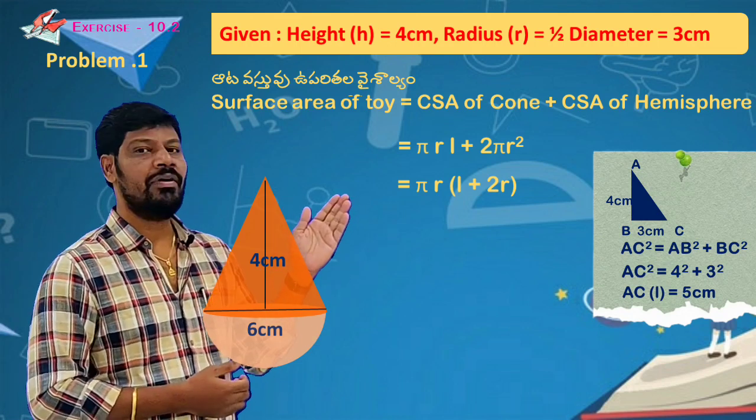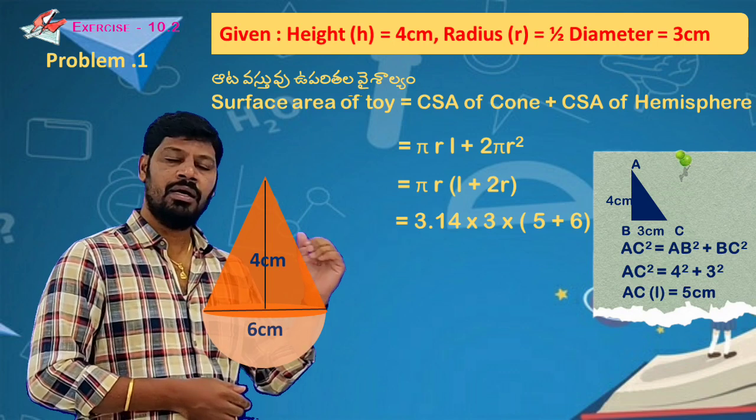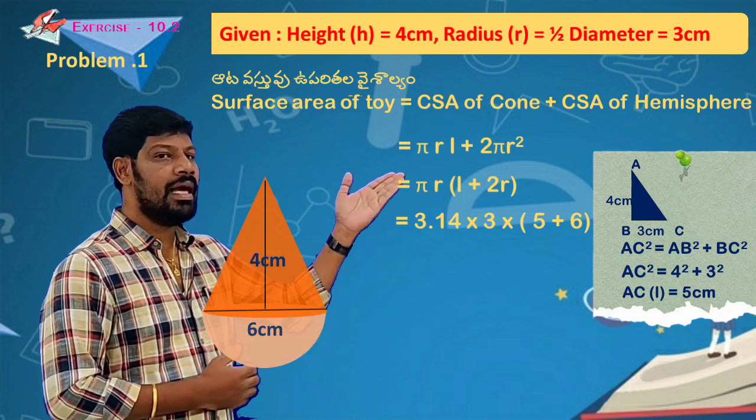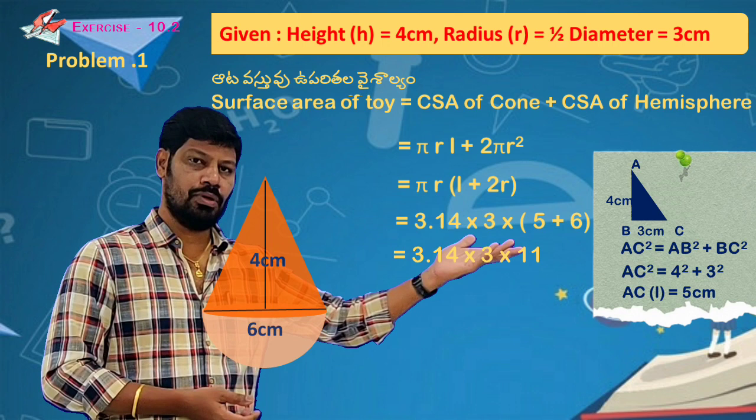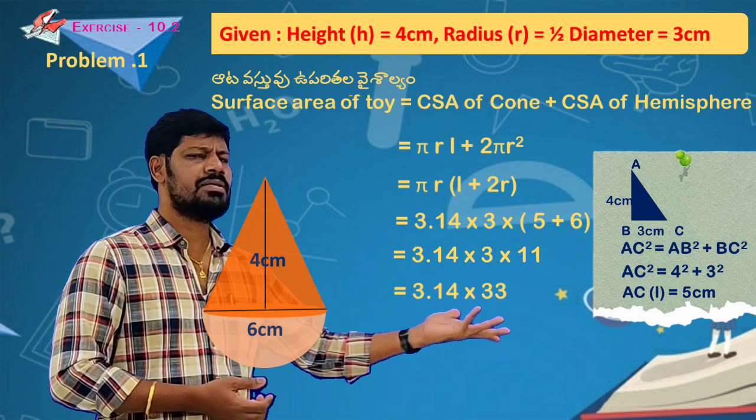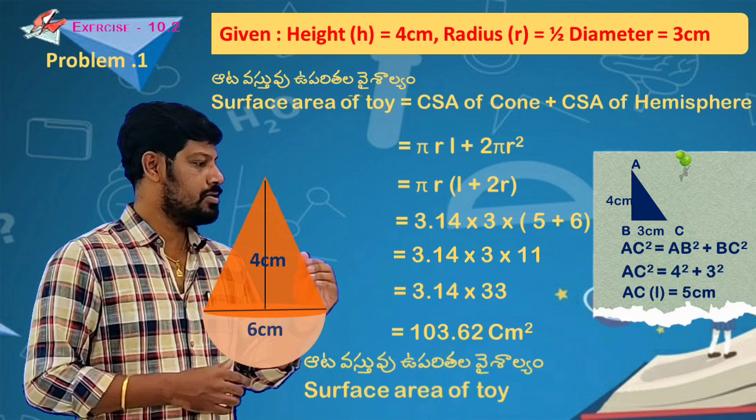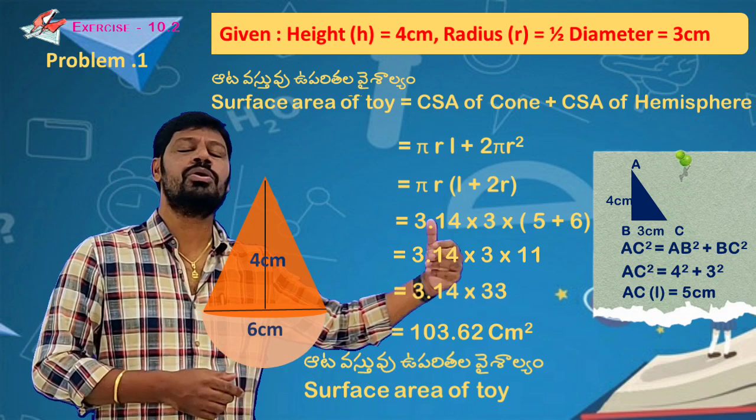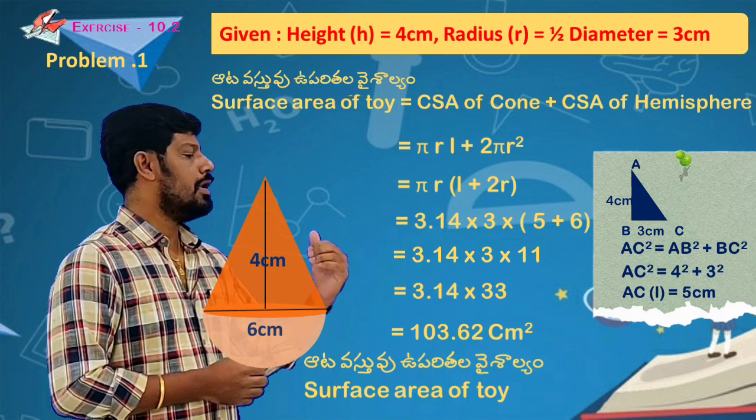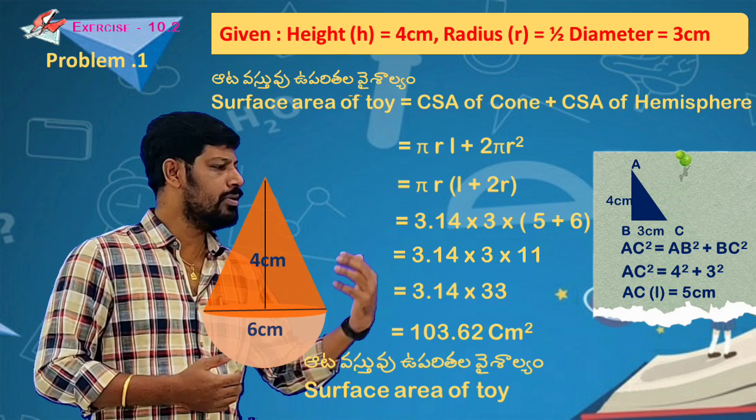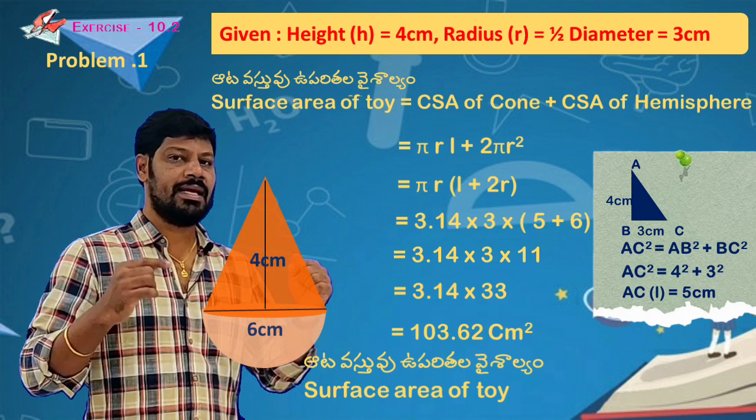We substitute: π value 3.14 into radius 3 cm into l which is 5 plus 2r which is 6, so 3.14 into 3 into 11 equals 3.14 into 33 cm². The final answer for the first question. The area is in cm² or m², and the volume is in cm³ or m³ or unit cube.